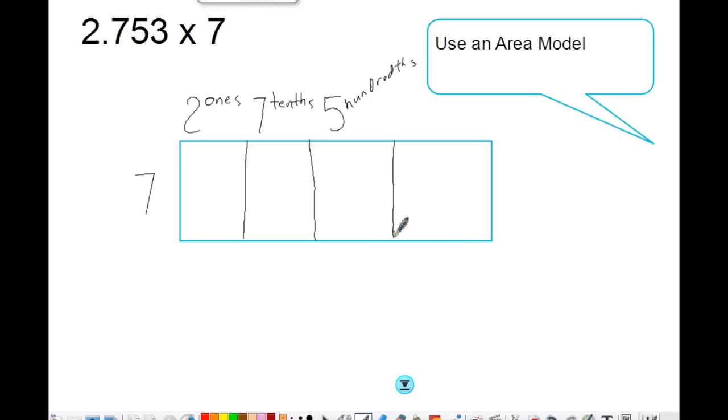And in the thousandths place I have three thousandths. Now remember that when we're multiplying by a number, each section is getting multiplied by that number. So seven times two is fourteen. I end up with 14 ones. Seven times seven tenths gives me forty-nine tenths. Make sure you label this so you don't get confused.